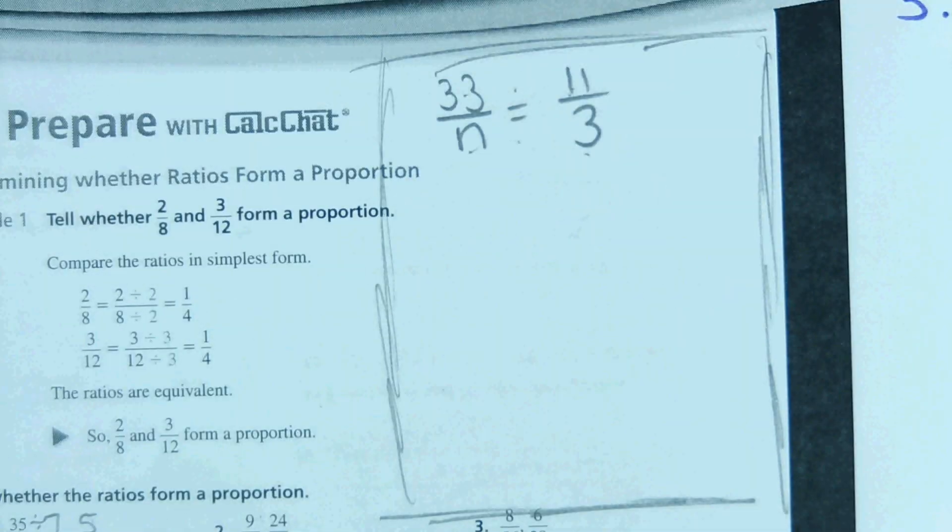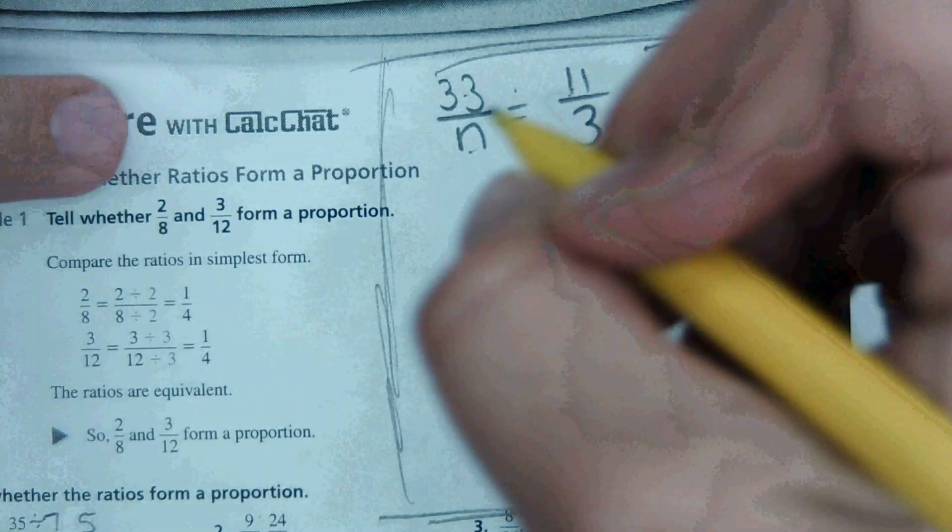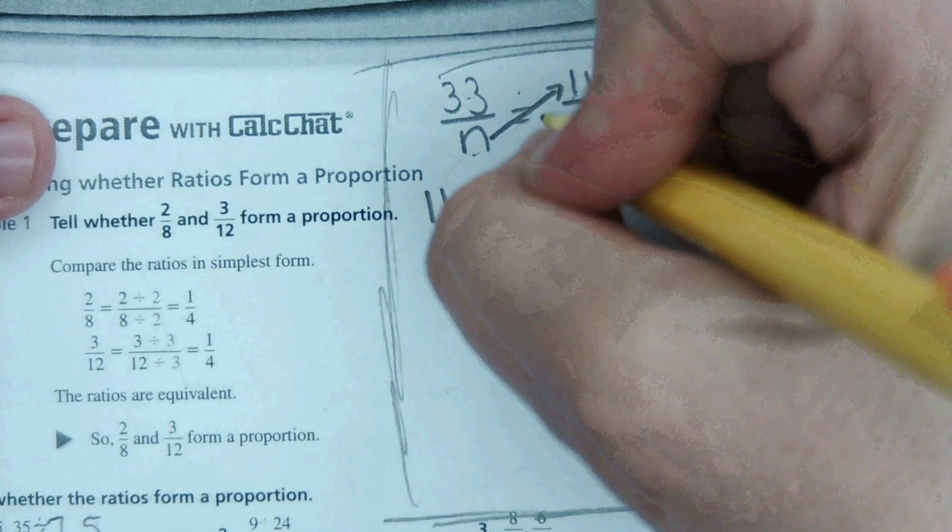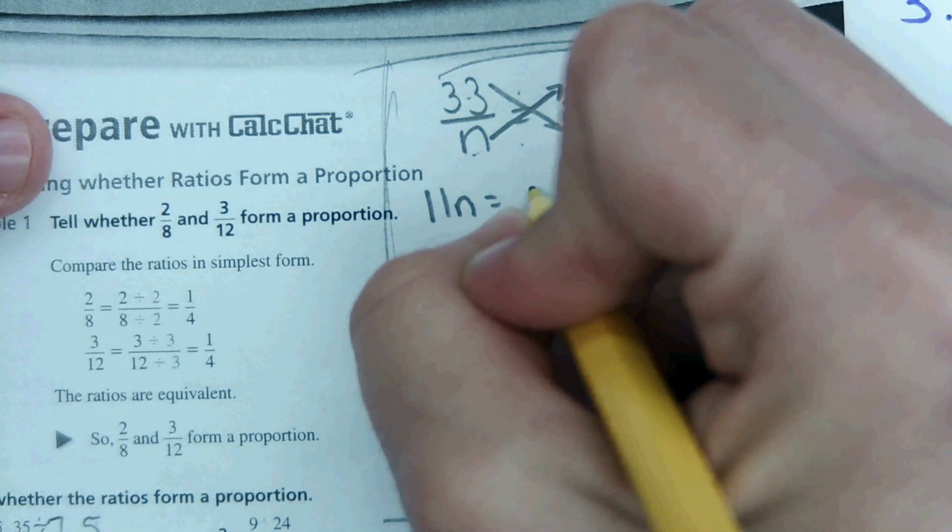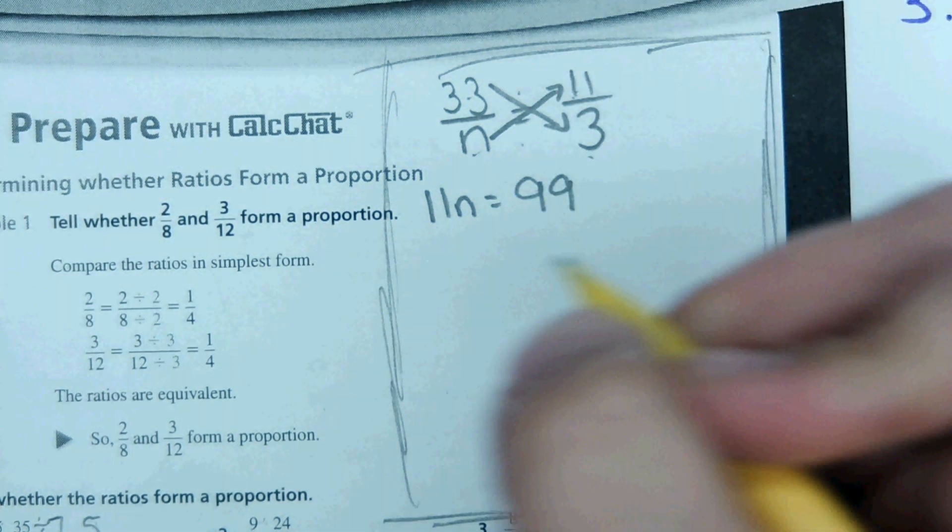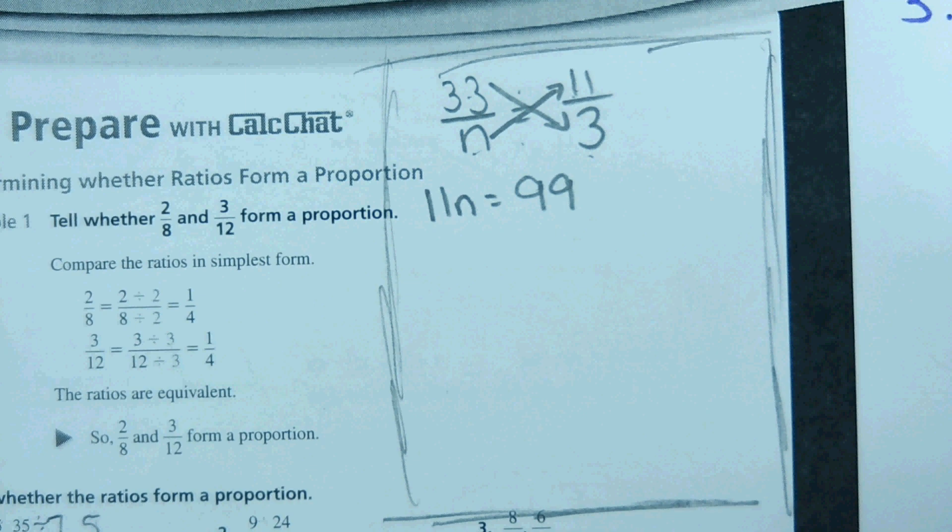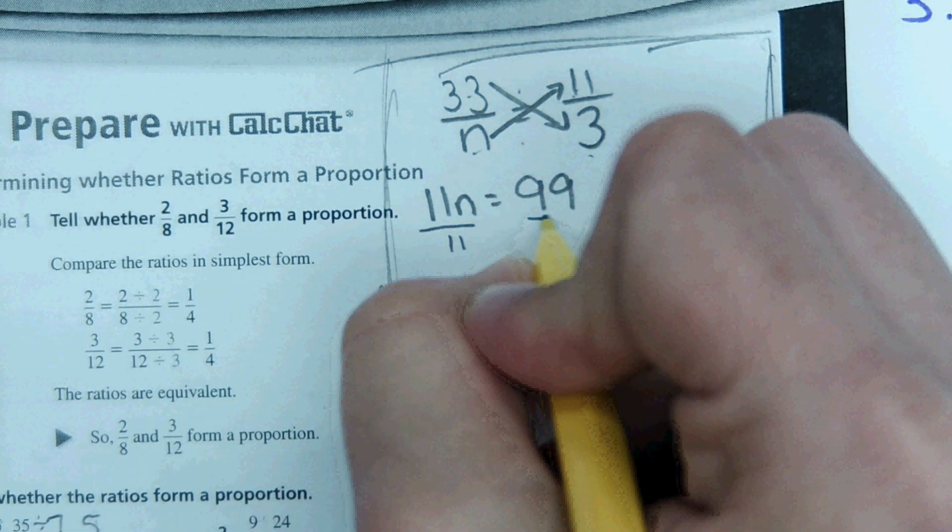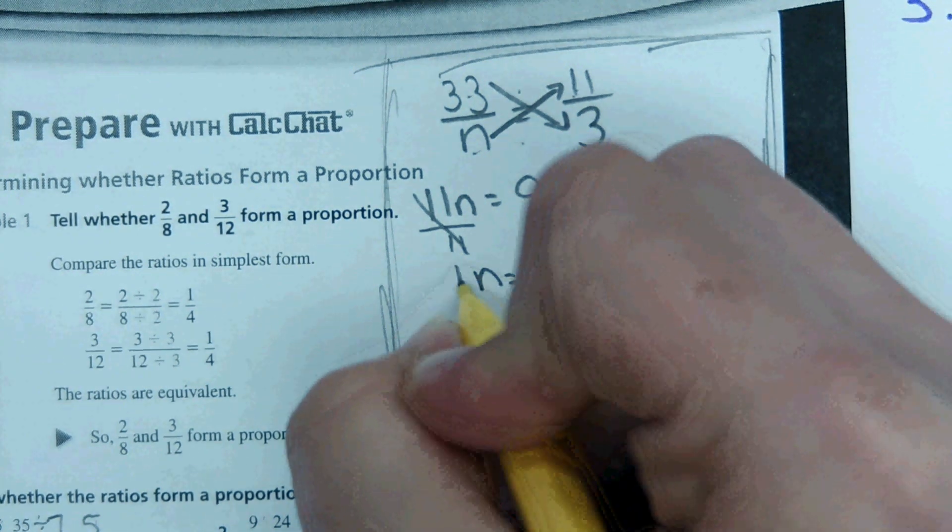If you haven't done your cross multiplication worksheet, if your work doesn't look like this, I don't want it. This is what the process is, and by practicing that process, it makes the harder ones easier. So here, n times 11 is 11n, and 33 times 3 is 99. 11n, then the next step to solve for n, divide by 11, we get n equals 9.